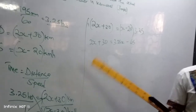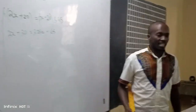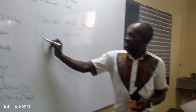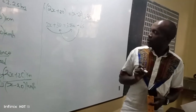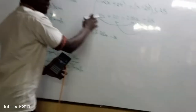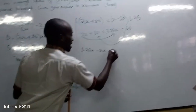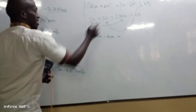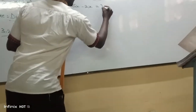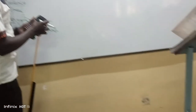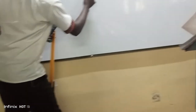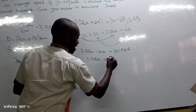Now we collect like terms. We have x on both sides, so we bring the x terms together and the constants together. This gives us 3.25x minus 2x equals 30 plus 65. So 1.25x equals 95.